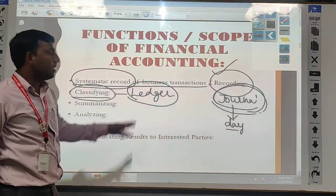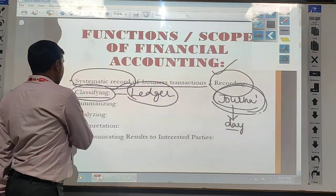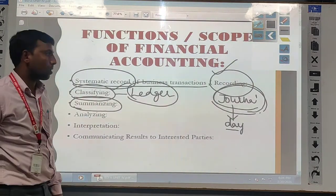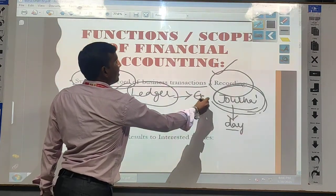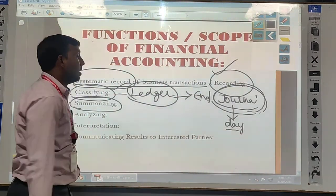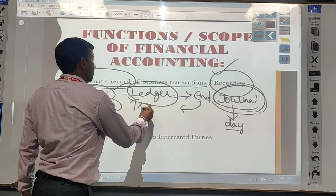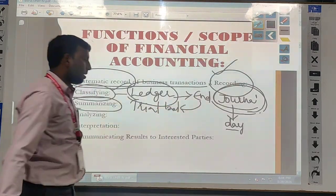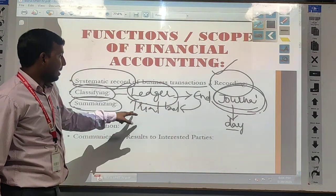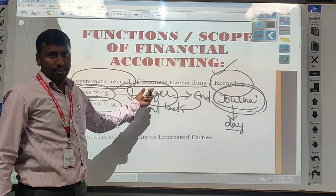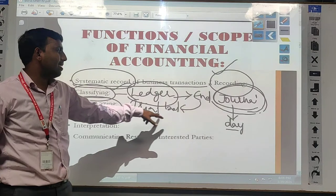After classifying, we go for the next step — summarizing. The summarizing means whatever the ending balances of these ledgers are there, the end results of the ledger account, again we are summarizing into a particular statement called trial balance. At a particular period of time we are preparing this statement — in the trial balance, all the end results of the ledger account balances are posted here. The book or statement is called as trial balance.